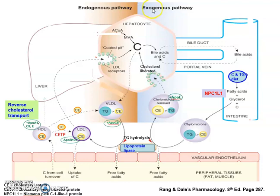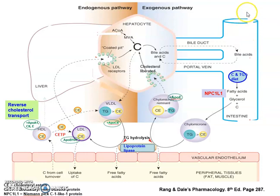We'll take a look at the exogenous and the endogenous pathway of cholesterol transport, starting with the exogenous pathway. This is really talking about the food that we eat that contains fats and how we ultimately get the cholesterol. This is going to represent our ileum, which is the final portion of our small intestines.